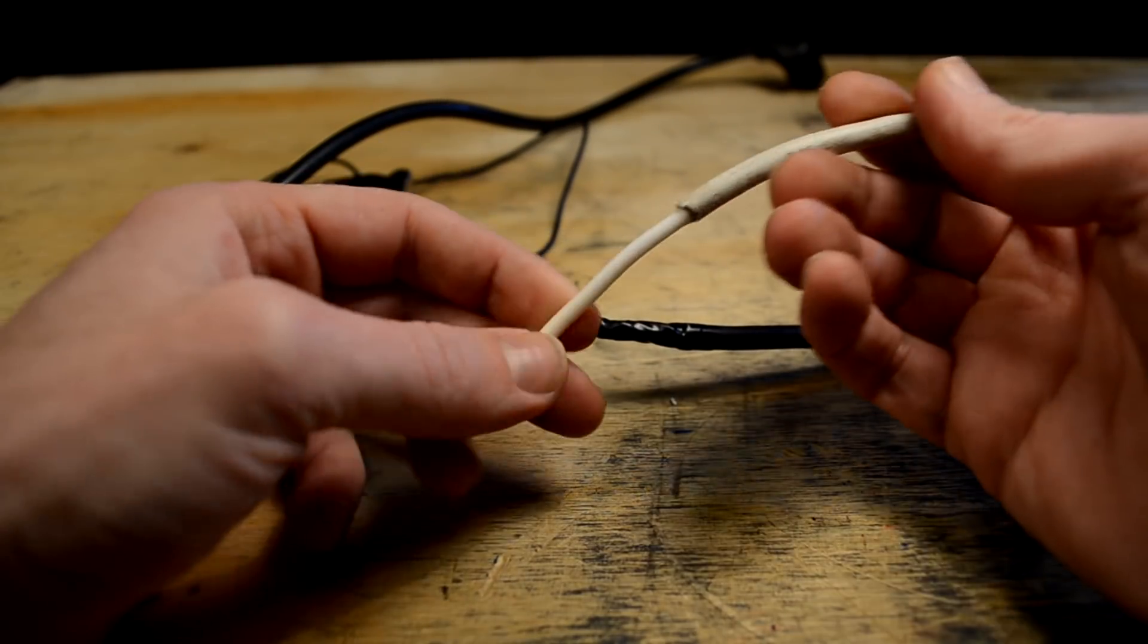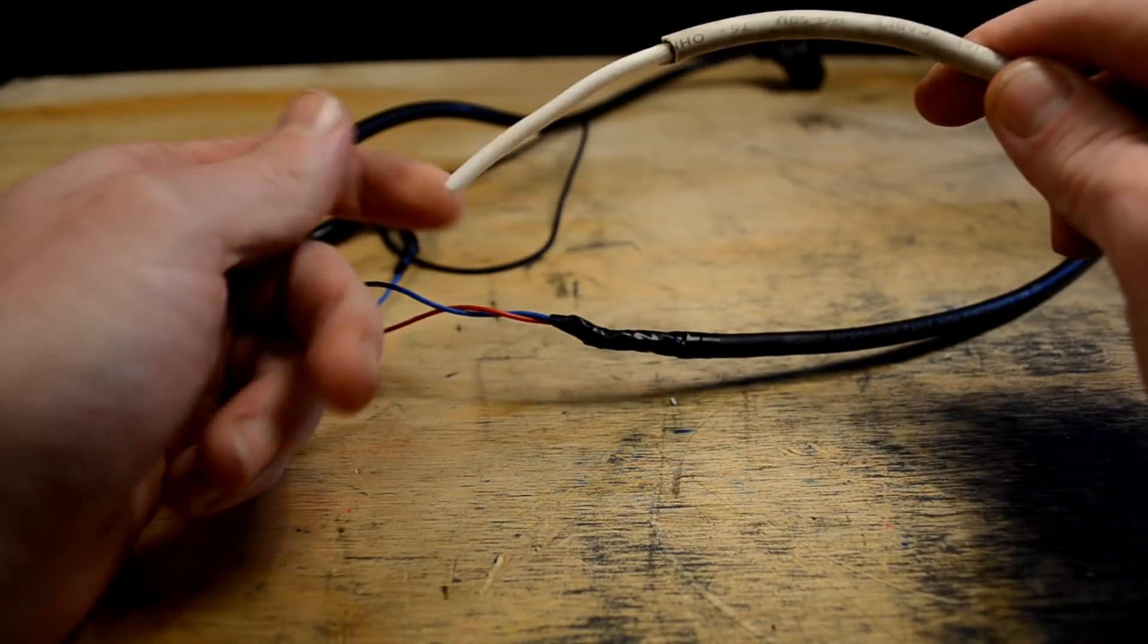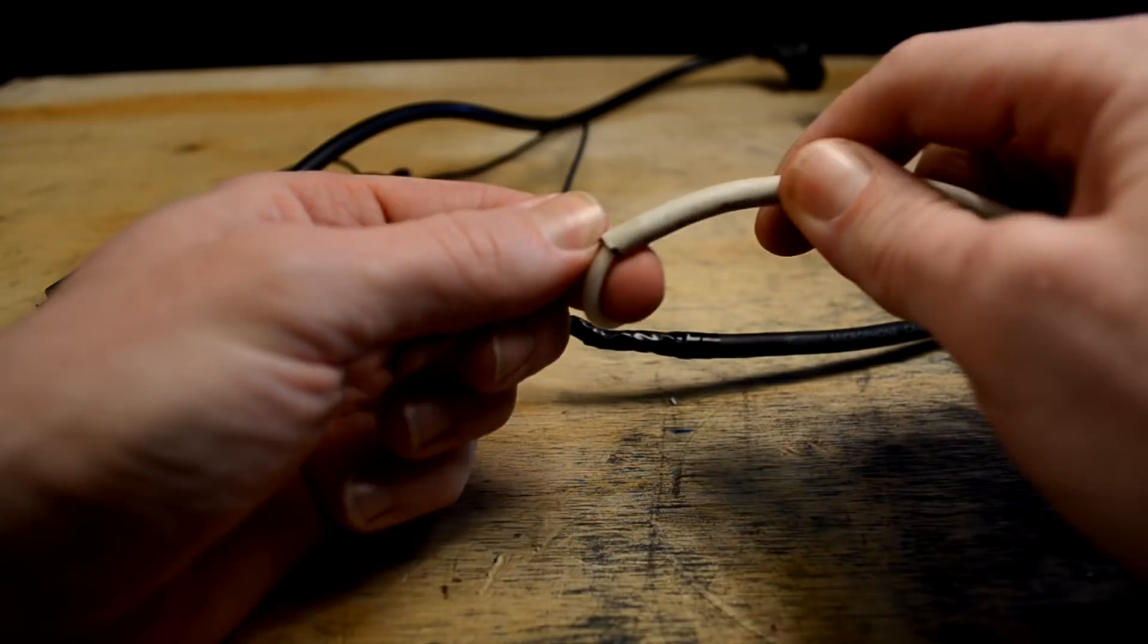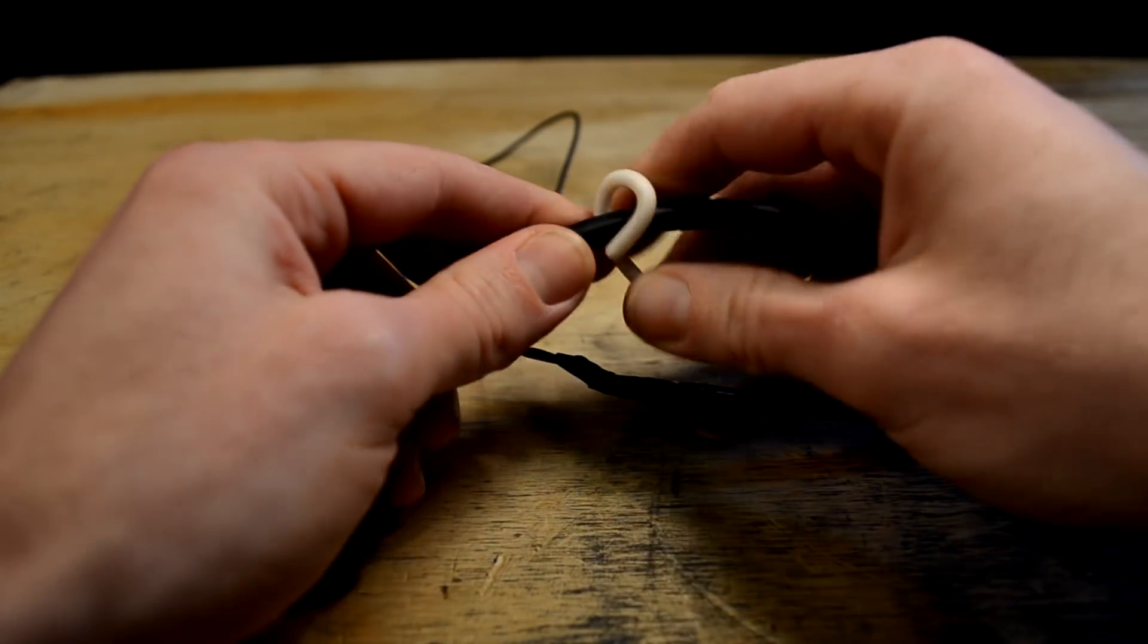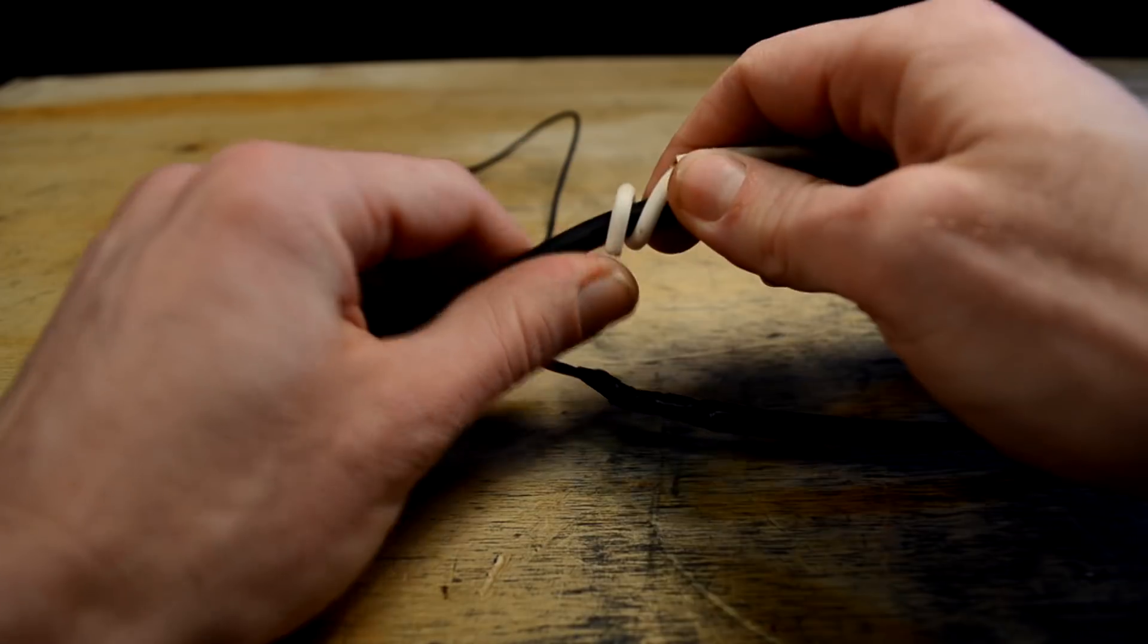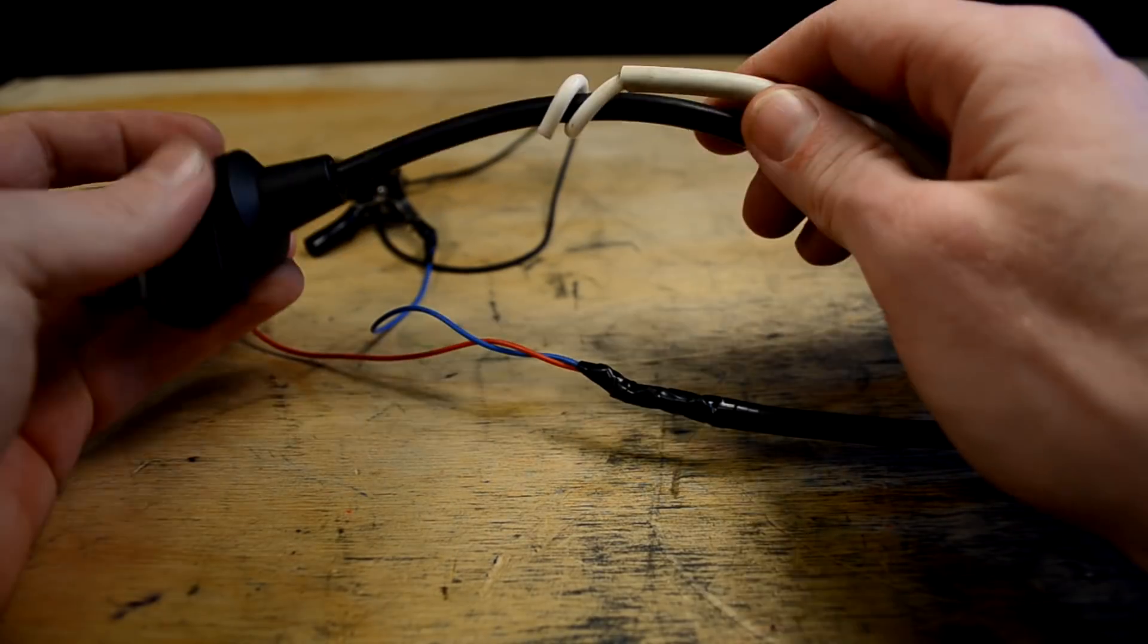Coax cables like this one work great too. Just wrap the inner lead around the spark plug cable. You might want to use some zip ties or tape to keep it stuck on there.